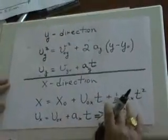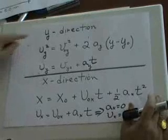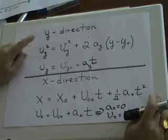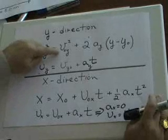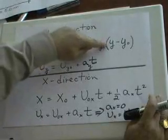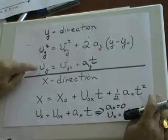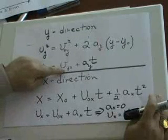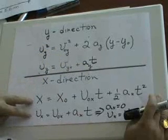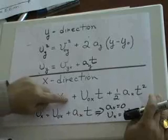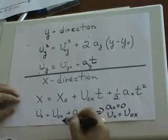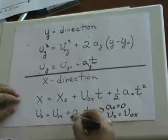We're going to have to start with two different equations of motion here. First in the y direction. We're going to use the third one. We haven't used that much. But this time we're going to use Vy² equals V0y² plus 2ay times (y minus y0). We're also going to use Vy equals V0y plus Ayt. And for the x direction, we're going to use x equals x0 plus V0xt plus 1/2 Axt². And Vx, which is going to be equal V0x plus Axt.